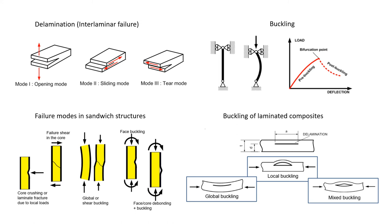Buckling is a mode of collapse under compression, characterized by the appearance at a critical applied load of out-of-plane bending deflections corresponding to a new equilibrium configuration. Buckling can significantly reduce the compressive strength and stiffness of composite structures and can lead to the development of other failure modes such as fiber failure.